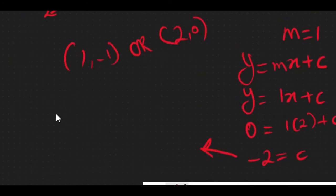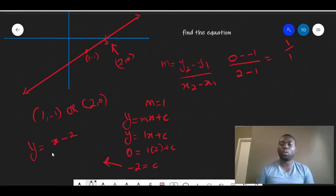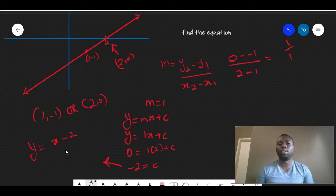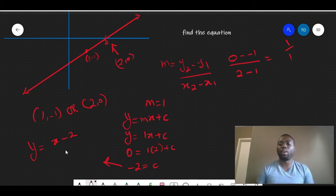So in so doing, our equation would be written as x minus 2, where our gradient is 1 and our y-intercept is -2. And this is exactly how they want us to find equations when the graph of a linear function is given. That's it.